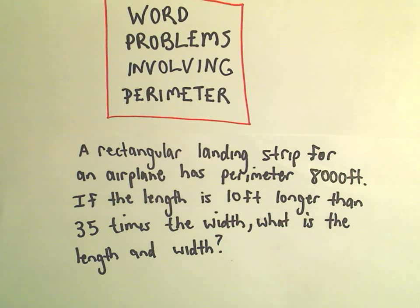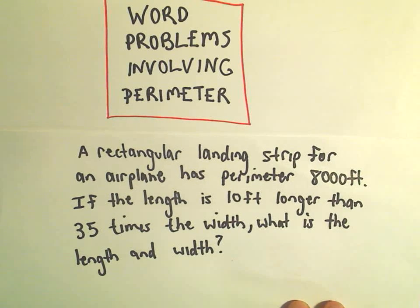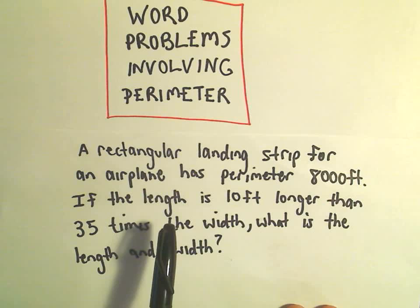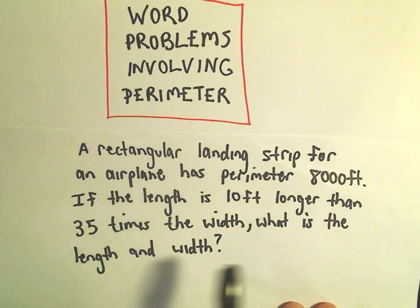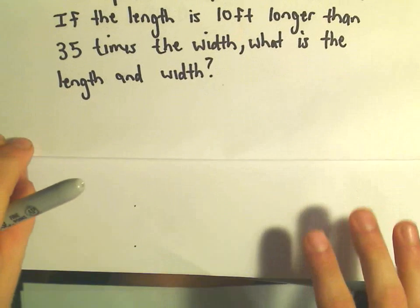Alright, in this video I want to do another word problem involving perimeter. In this problem we're going to have a rectangular landing strip for an airplane, just like a runway, that has a perimeter of 8,000 feet. If we know that the length of the landing strip is 10 feet longer than 35 times the width, we want to be able to find both the length and the width.